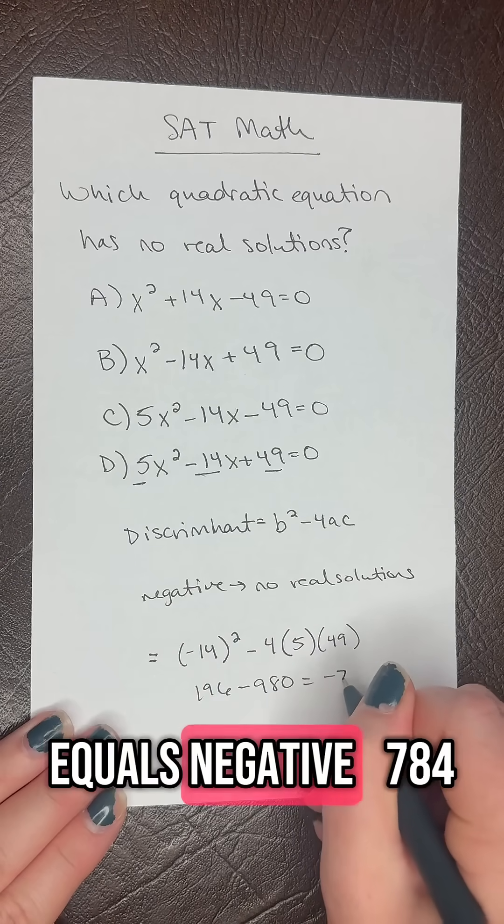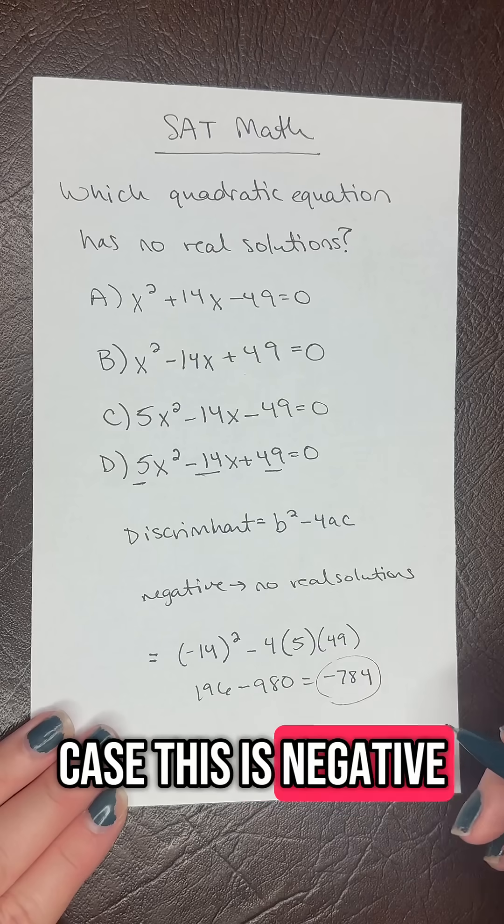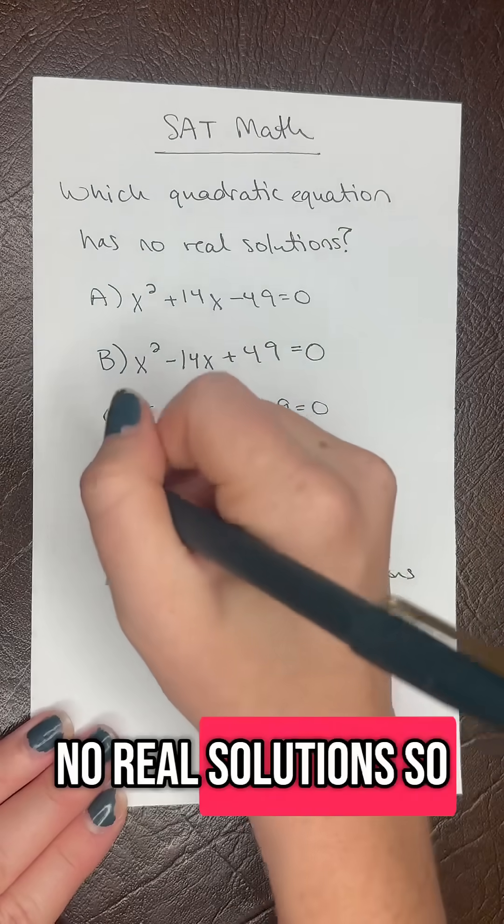equals negative 784. So in this case, the discriminant is negative, so this will have no real solutions. Your answer is going to be D.